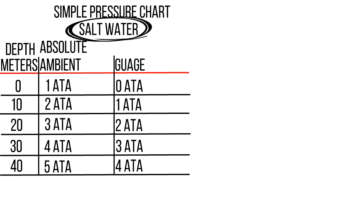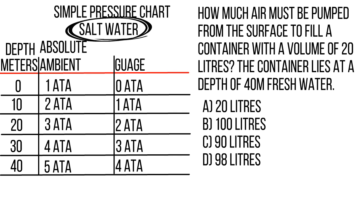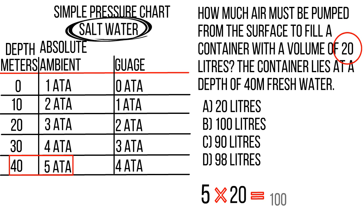Let's do one more example to prove that picking the answer a little bit less for freshwater works. Question: how much air must be pumped from the surface to fill a container with a volume of 20 litres at a depth of 40 metres fresh water? At 40 metres that's 5 atmospheres in saltwater. As you pump air down it gets denser, so you'll need to pump more than 20 litres — multiply 5 by 20 to get 100. That would be the answer in saltwater, but it's freshwater. Looking at answers A, B, C, and D: A is way less, C is quite a lot less, D is the one that's a little bit less. D is the correct answer — 98 litres.